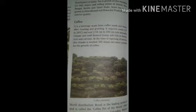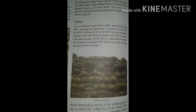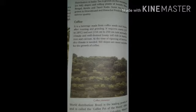Coffee is also a beverage made from coffee seeds and beans. It requires warm temperature of 15 to 28 degrees Celsius and heavy rainfall of 150 to 250 centimeters annually. It needs well-drained loamy soil rich in humus, iron and calcium. World distribution of coffee: Brazil is the leading producer and is called the coffee pot of the world. Other major producers are Colombia, Mexico, Indonesia, Jamaica and East Africa.